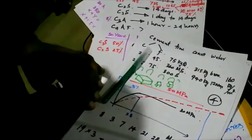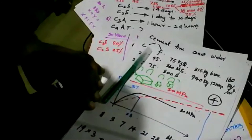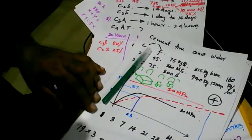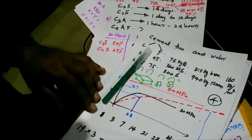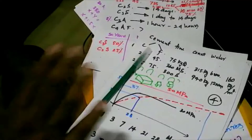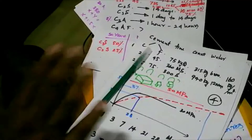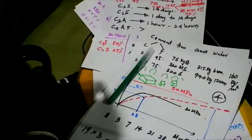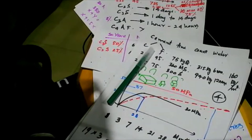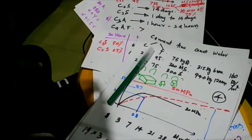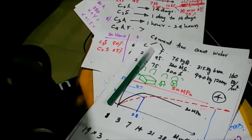We fill a barrel to a marked level with water and add the specified dose of admixture. When this admixture-water mix is added to the mixer, the concrete becomes super-plastic — cohesive, pumpable, and easily compactable — giving excellent quality.